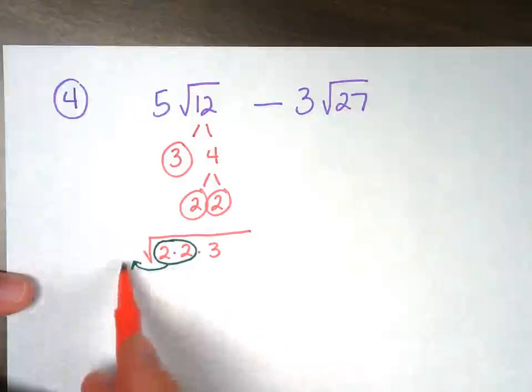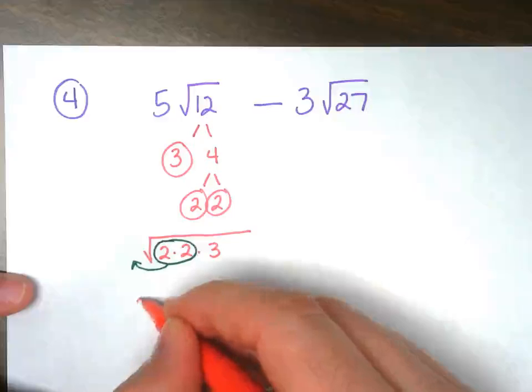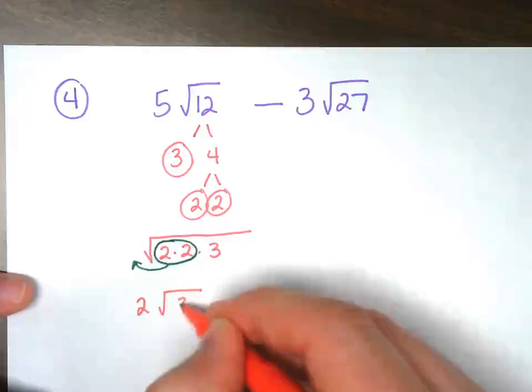But the 2, the pair of 2s comes out to be just 2, and then we have a 3 on the inside.